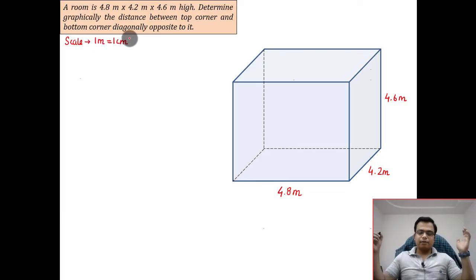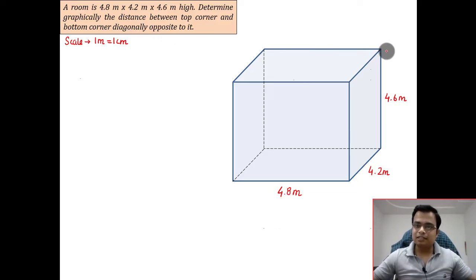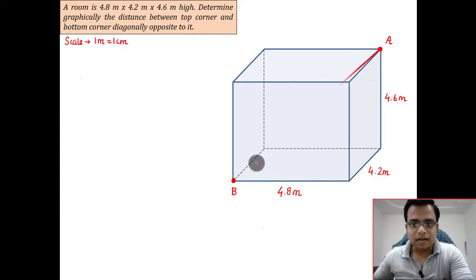Determine graphically the distance between top corner and bottom corner diagonally opposite to it. Let's say this is the top corner and call this as A. The opposite corner, diagonally opposite bottom corner, is this one. Let's call this as point B.